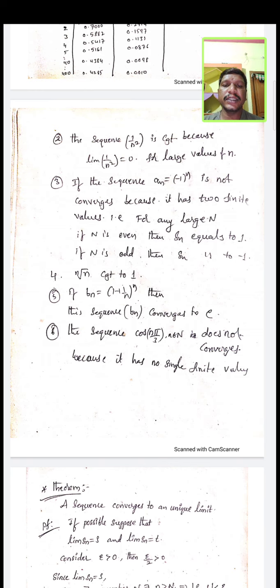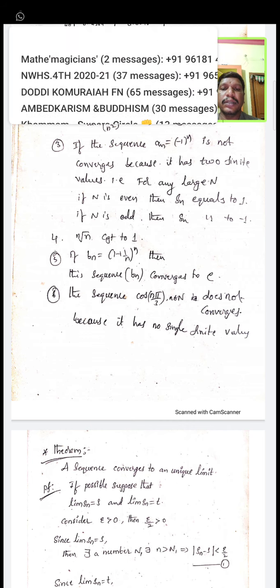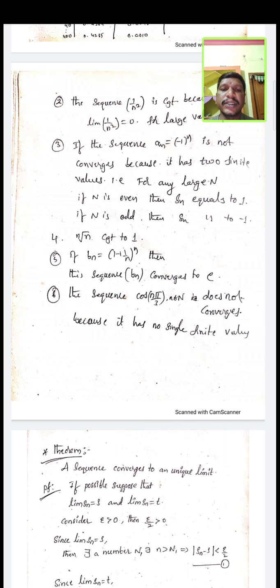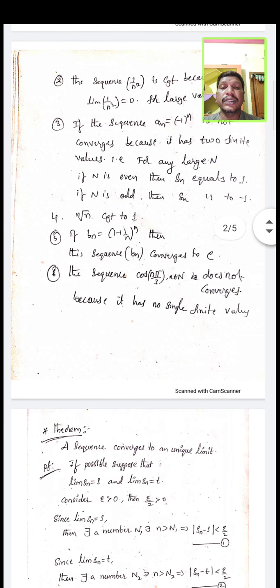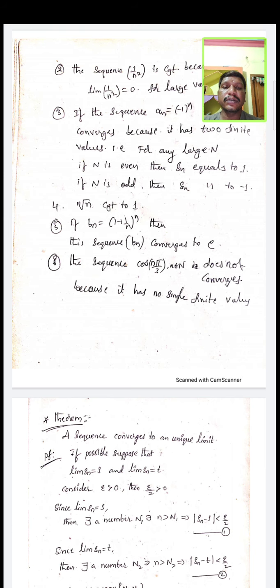Another example: the N-th root of N converges to 1 by the Cauchy test or general convergence test. Also, if B_N = (1 + 1/N)^N, then the sequence B_N converges to e, since the limit as N tends to infinity of (1 + 1/N)^N equals e, which is a finite value. Therefore B_N converges to e.